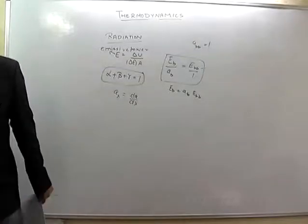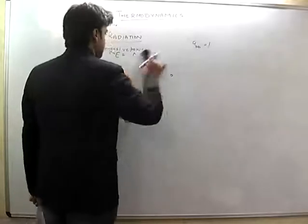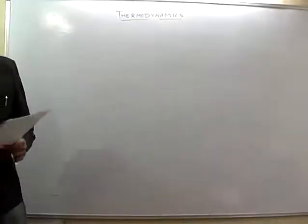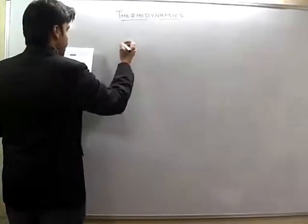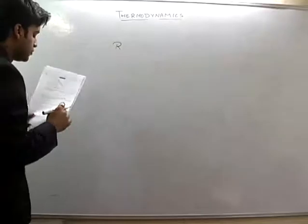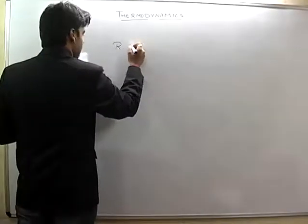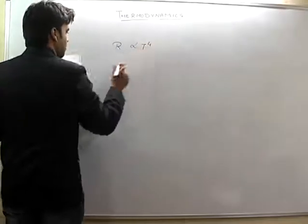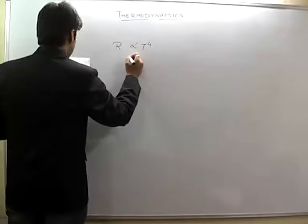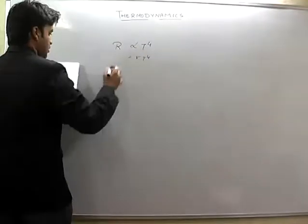Now we go to Stefan's law, which is more important. Stefan's law says that the radiancy radiated by a body is found to be proportional to the fourth power of the absolute temperature of the surface of the body. R is directly proportional to T raised to the power of 4, which means R is equal to sigma T raised to the power of 4.